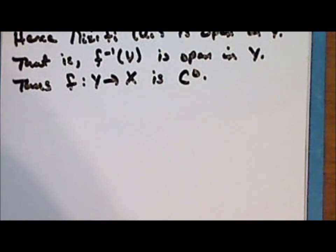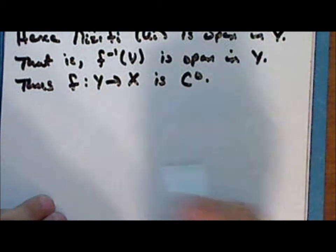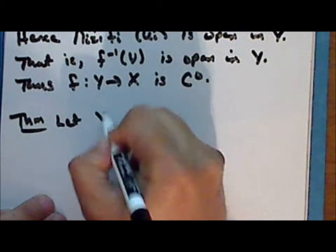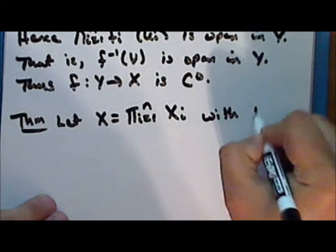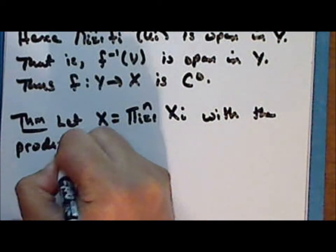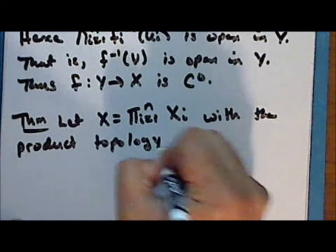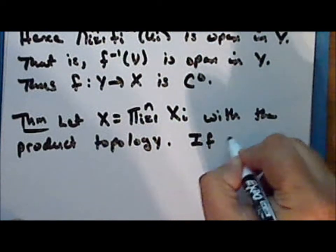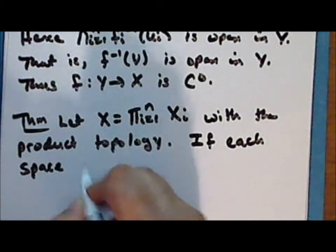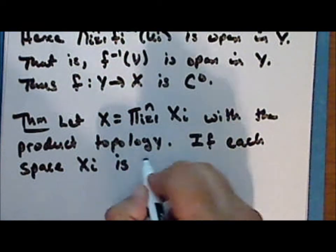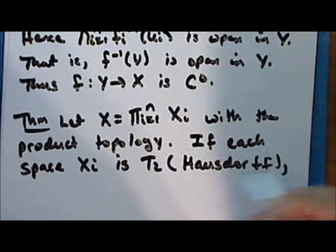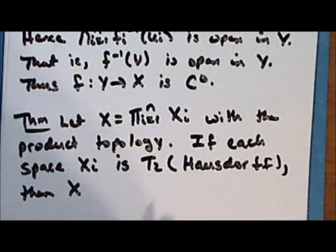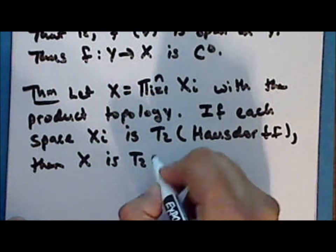So now we will begin to consider the topological properties of the product topology on a finite product set. First we will look at separation conditions. As a theorem: let X be the finite product of n topological spaces with the product topology. If each of the factor spaces X sub i is T2 or Hausdorff, then the product space X is T2 or Hausdorff.